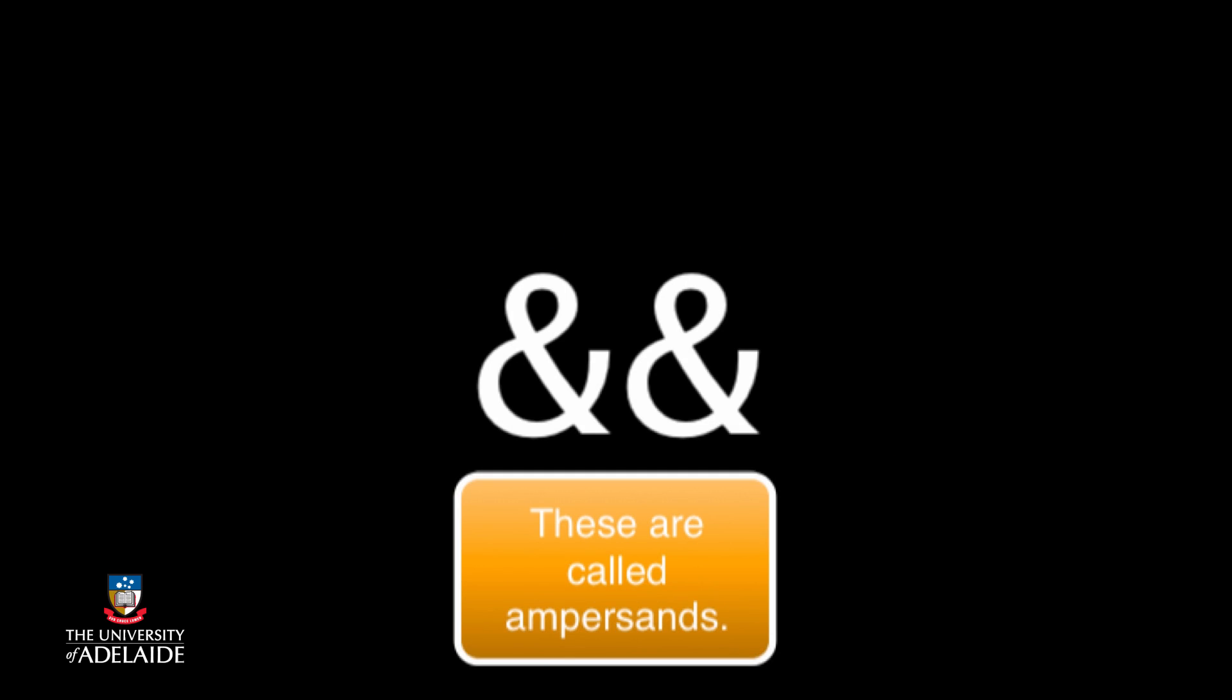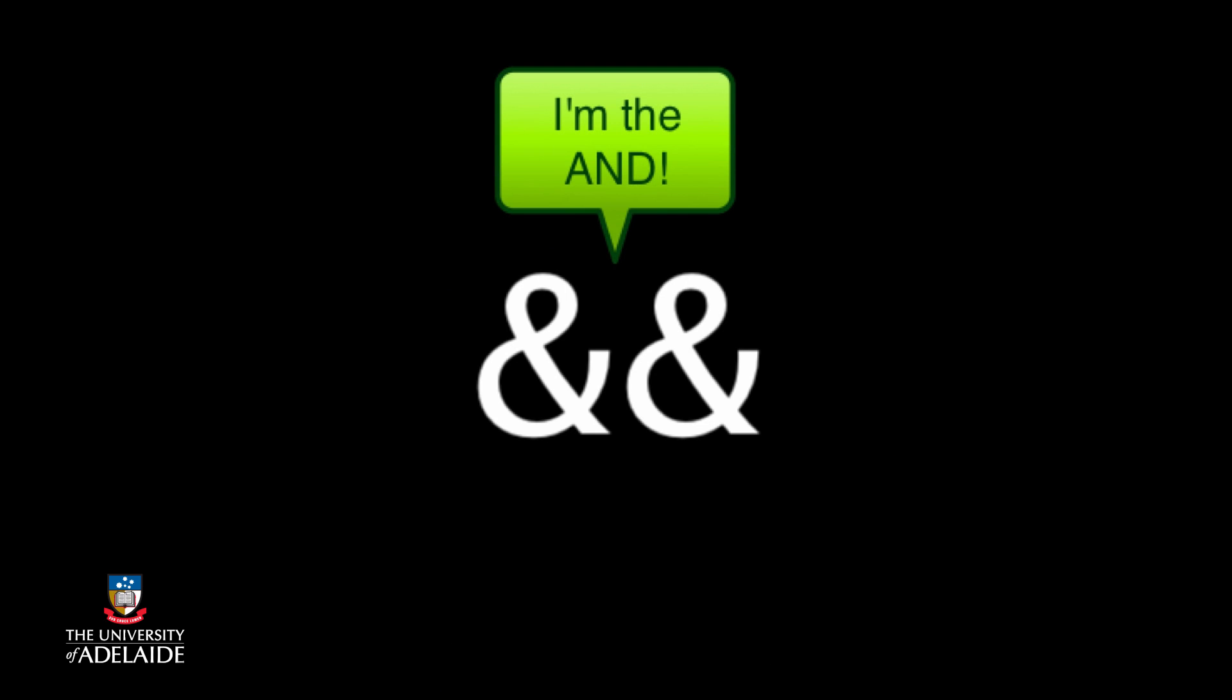But AND requires both conditions to be true if it's going to provide a value of true. If either of the conditionals provided for the AND are false, then the AND will return false. Processing uses the double ampersand symbol for AND. This can usually be found sitting above the 7 on your keyboard and you can use it by holding down the shift key and pressing 7.